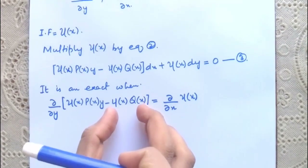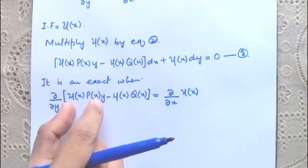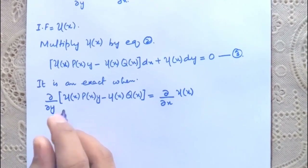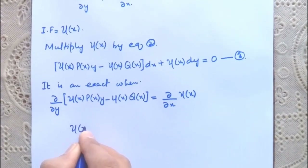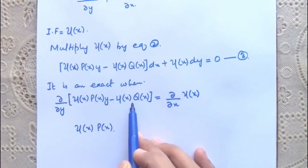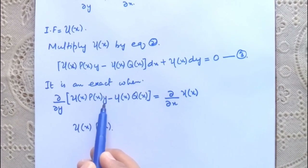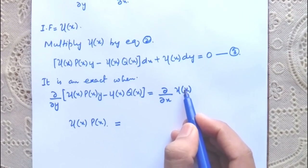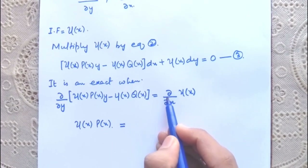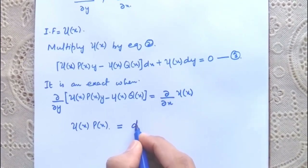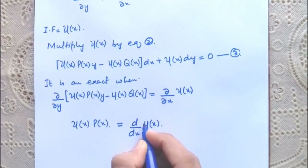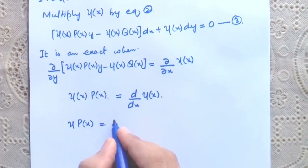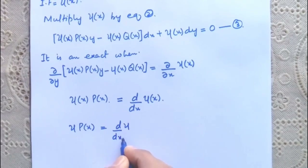Taking the partial derivative of the left expression with respect to y, treating all x-terms as constants, gives μ(x)P(x), since the derivative of y is 1 and P(x) is its coefficient. Since μ(x) is a function of x only, its partial derivative equals its ordinary derivative. So we get μ(x)P(x) = dμ/dx.